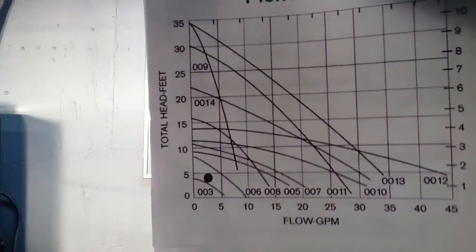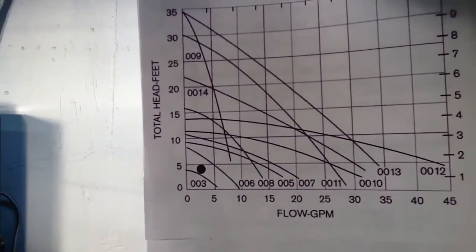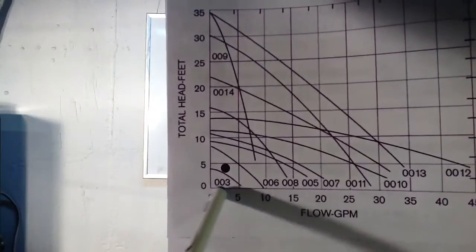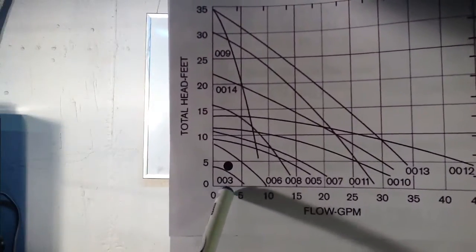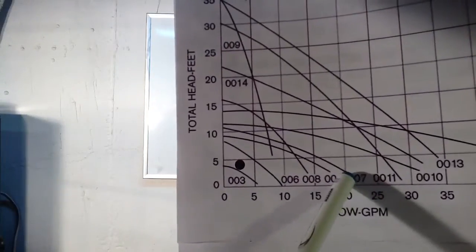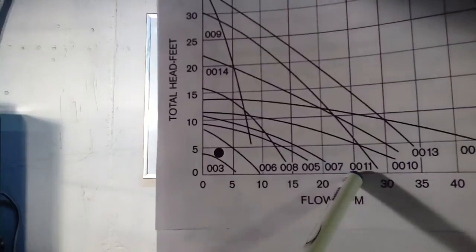But we're down in this area here, so if you can see, TACO makes 003s, 6s, 008s, 005, 007, a very popular pump, 11 and 12.